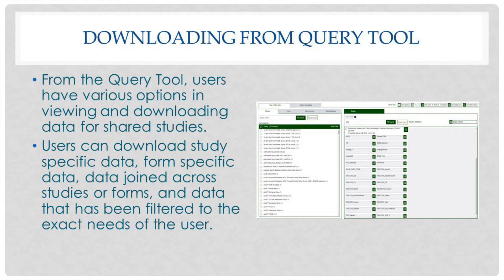In the next example, downloading from the query tool will be reviewed. In the query tool, users have the ability to view data based on studies, assessments, and data elements. Users also have the ability to join forms across studies and filter data on specific search parameters. The user can download their query as either a CSV or a flattened CSV. The difference is that repeatable groups appear as separate column headers in the flattened CSV, while they remain within the data rows of the normal CSV.